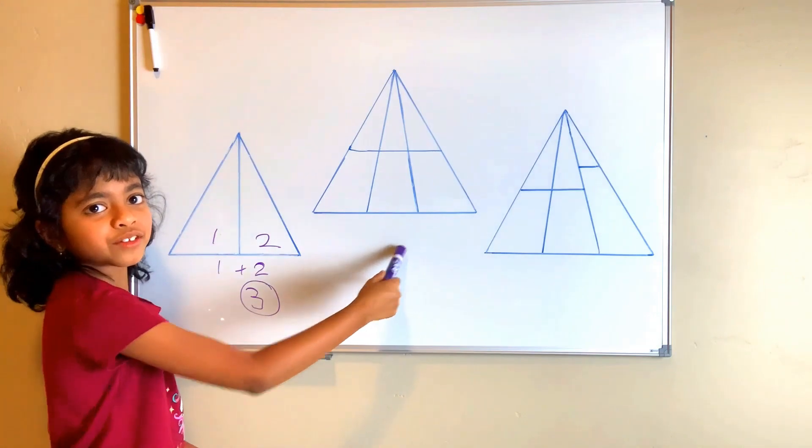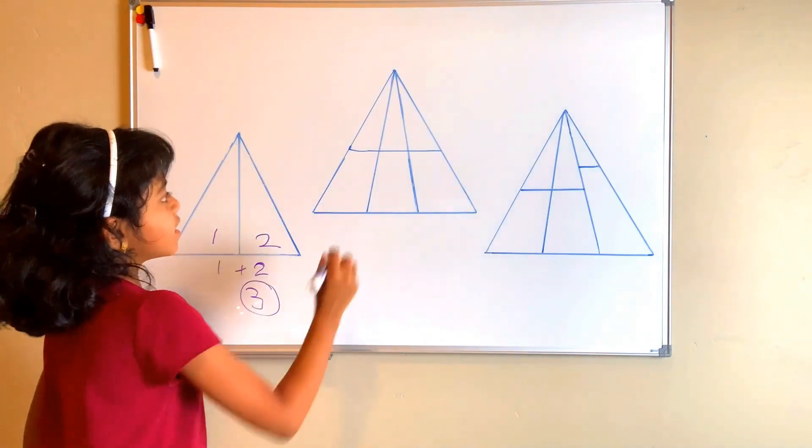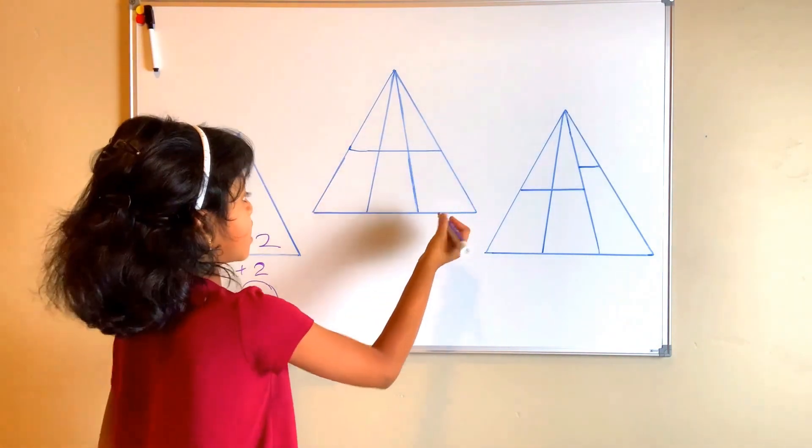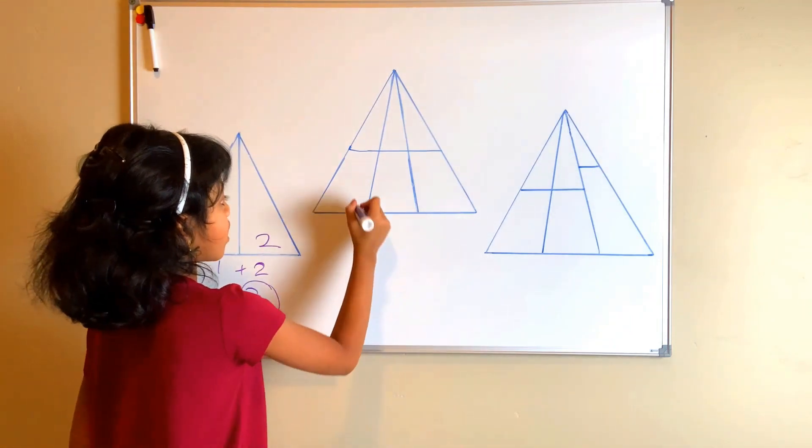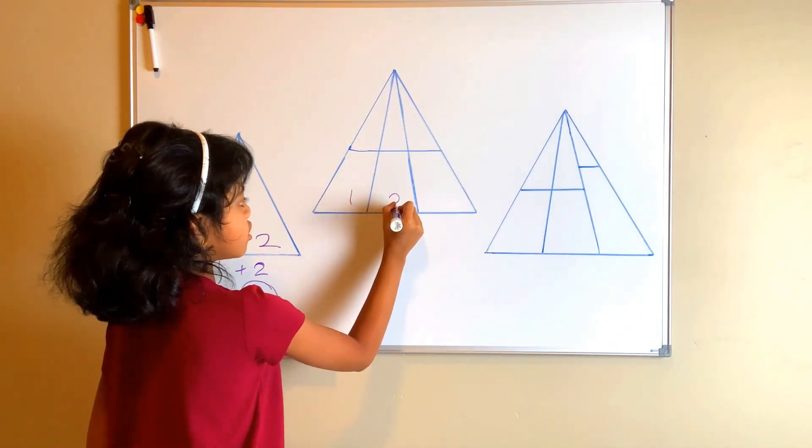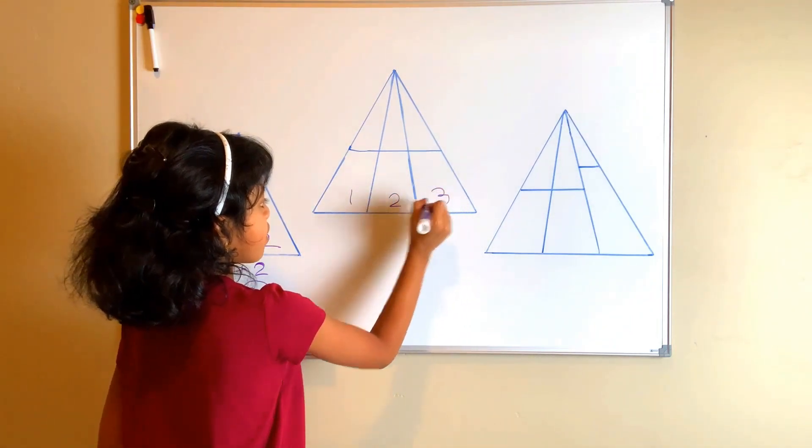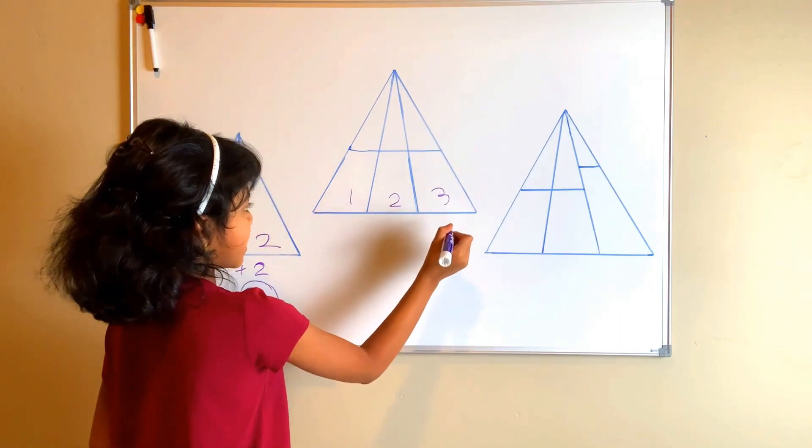Now let's move on to the next one. There are two bases in this one. So let's start with the bottom one. One, two, three. One plus two plus three is six.